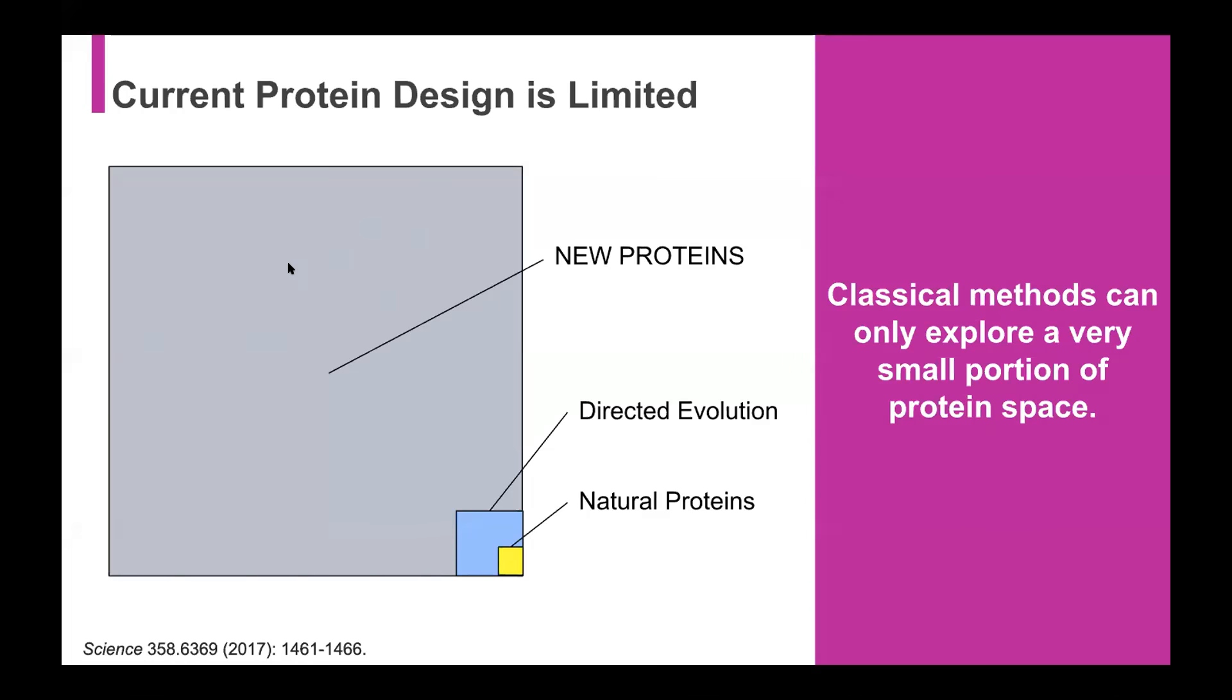And just to give you a sense of the size of this problem, there are more protein possibilities in a single 100 amino acid chain than there are atoms in the universe. And that is just the possibilities of a single protein, right? And so classical methods can really only explore a small fraction of this space.